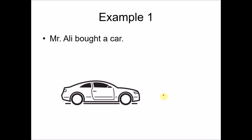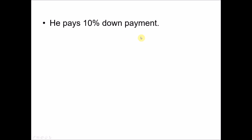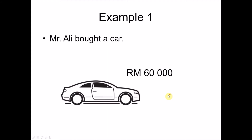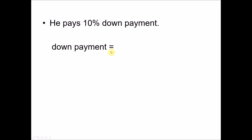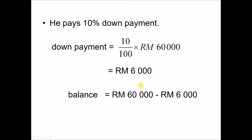Let's look at Example 1 from the textbook. Mr. Ali bought a car costing sixty thousand ringgit. He pays a ten percent down payment — meaning he does not pay the full sixty thousand. He only pays ten percent of sixty thousand in cash, which is six thousand ringgit. The remaining balance is sixty thousand minus six thousand, which is fifty-four thousand ringgit.